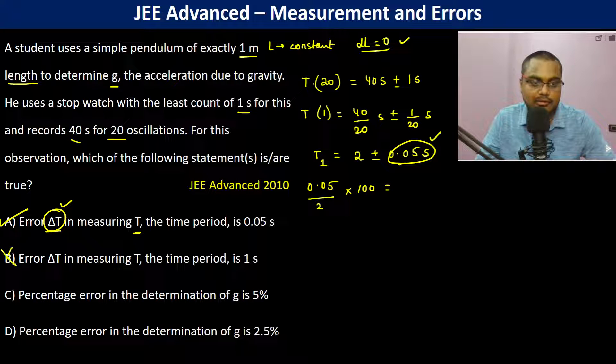This is wrong because this 1 second was for how many? 20 oscillations. Therefore, this is wrong.